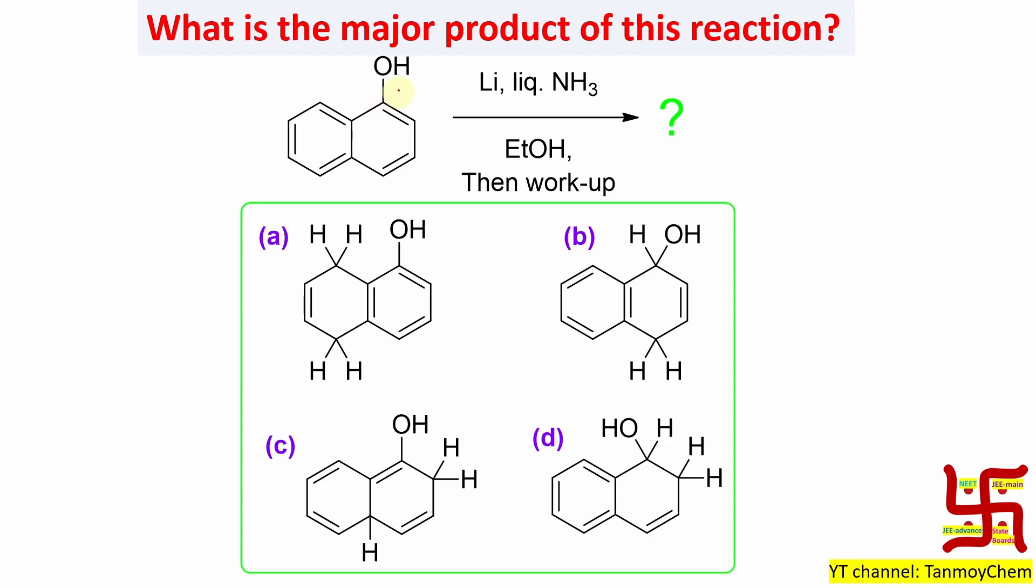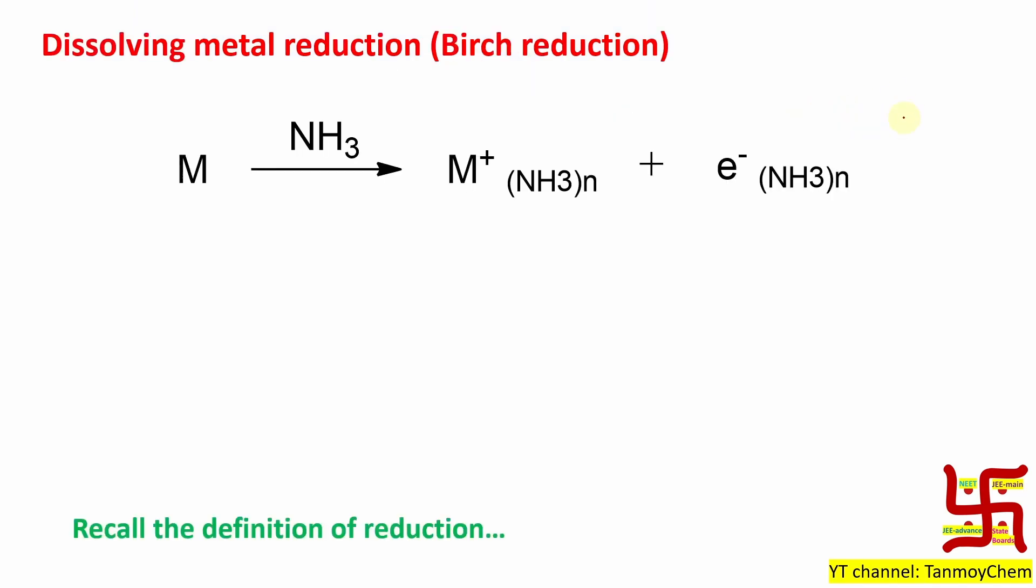So let's start. What is the major product of this reaction? So you can see it's a naphthol, more specifically it's called alpha-naphthol. It undergoes reaction with lithium, liquid ammonia, ethanol, then work up. What is the product? By the way, this condition has a name - it's called Birch reduction or dissolving metal reduction.